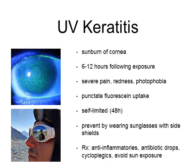UV keratitis, or snow blindness, is essentially a sunburn to the cornea. It usually occurs 6 to 12 hours following exposure. People develop severe pain, redness, photophobia, and they just cannot function. Fluorescent staining shows punctate fluorescent uptake. The condition is self-limited and usually resolves within two days, but it is very miserable and can ruin someone's trip. Prevention is key — make sure you wear glacier sunglasses with protective side shields when traveling on a glacier, even in cloudy conditions. Treatment includes anti-inflammatories, antibiotic drops, cycloplegics, and avoiding further sun exposure.